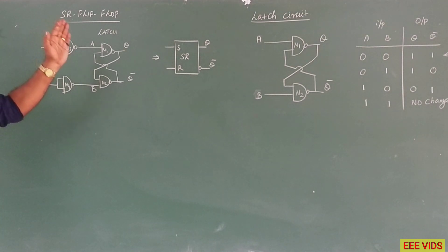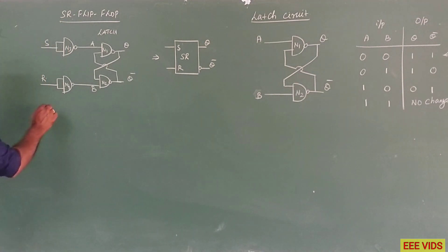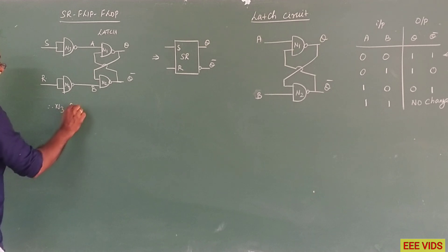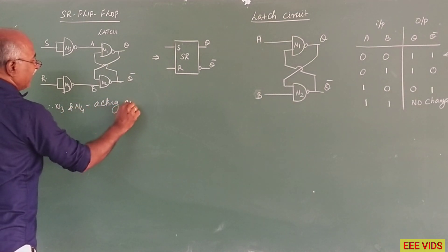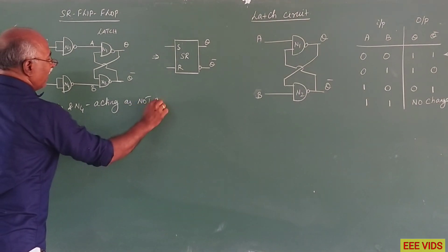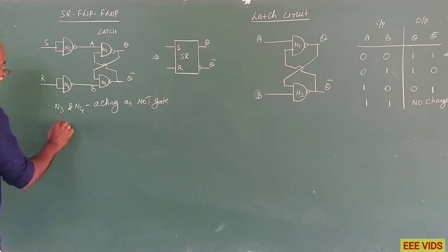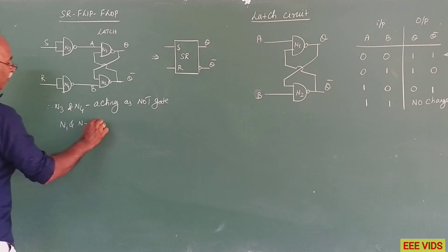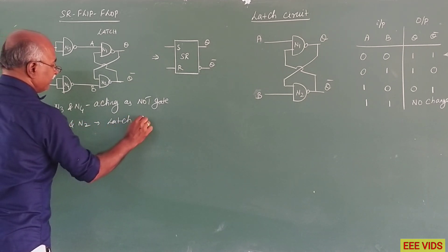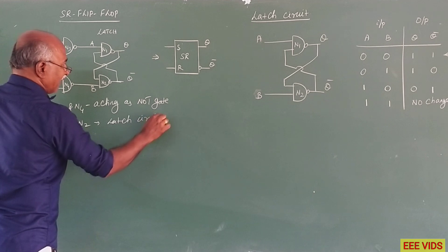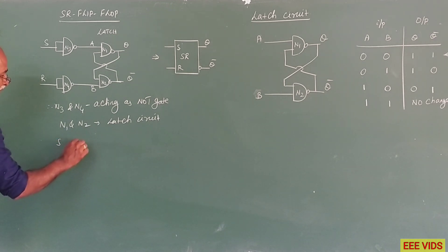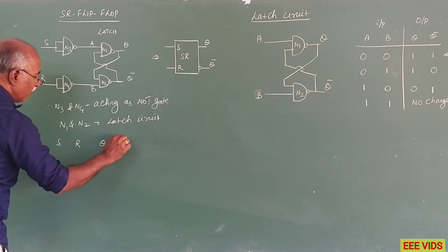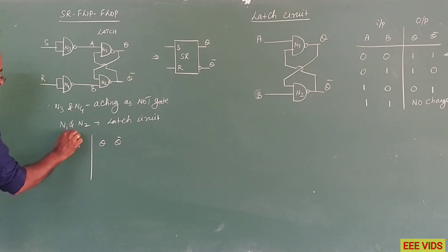Now, if we apply any input, it will be complemented. So here, in the SR flip flop, n3 and n4 are acting as NOT gate. The input is short and through the NOT gate. N1 and n2 form the latch circuit, acting as a latch circuit. So in the latch circuit, the input is based on the output. Now, this is the truth table — S input, R input. This is the basic output Q and Q bar. So this is the input and output.